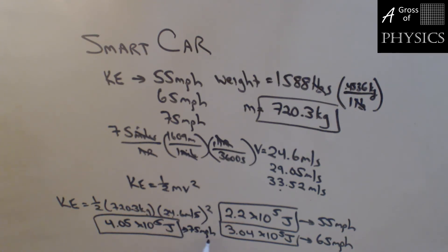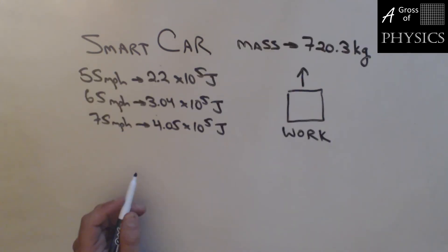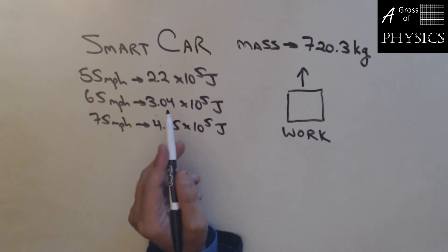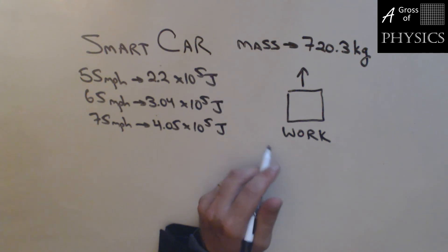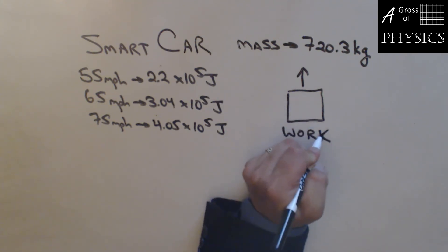Changing your velocity by 10 miles per hour each time increases it by over 100,000 or just about 100,000 joules every single time. When we're talking about joules, that's something that's difficult for us to grasp. So what I want to do is relate these numbers that we just found with the smart car into how high we would have to lift it to do the same amount of work.